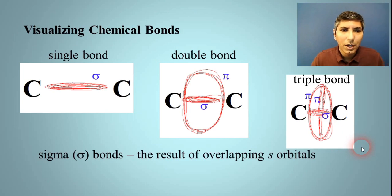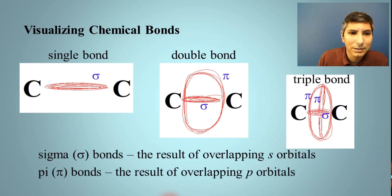Sigma bonds, just so you know, are called that because they're the result of overlapping s orbitals. As we've learned previously, s orbitals are spherical in shape, whereas pi bonds are the result of overlapping p orbitals. And so they have that more of a looped shape.